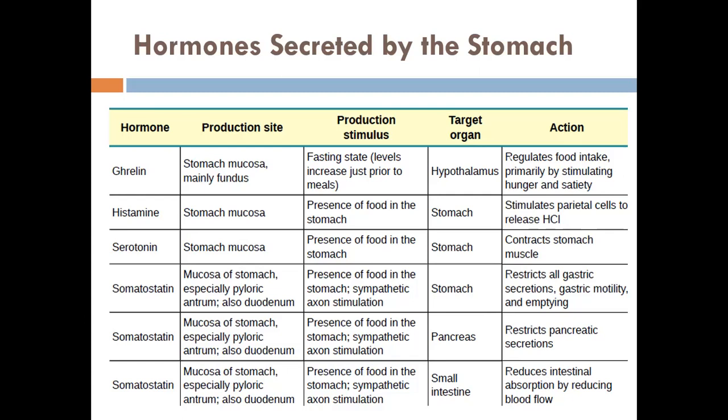Histamine is produced by stomach mucosal cells — the ECL cells. The stimulus is the presence of food in the stomach; those chemicals stimulate the ECL cells to produce histamine. In the stomach, histamine stimulates the parietal cells to release a lot of hydrochloric acid. Serotonin is also secreted by stomach mucosal cells; in the presence of food, it increases stomach contractions — mixing contractions and peristaltic contractions — enhancing gastric emptying.